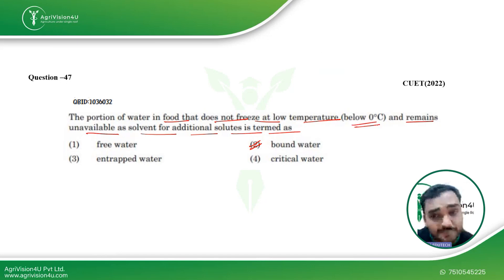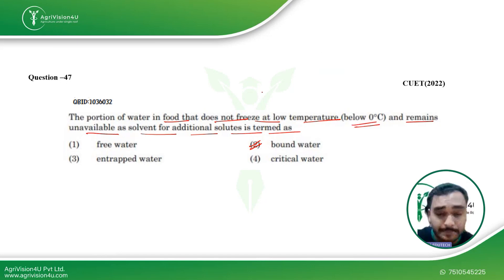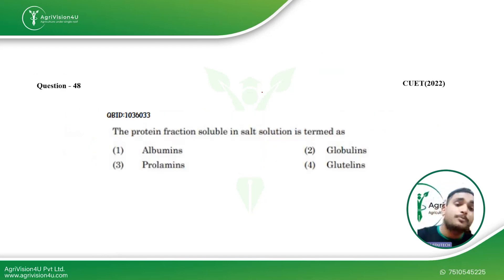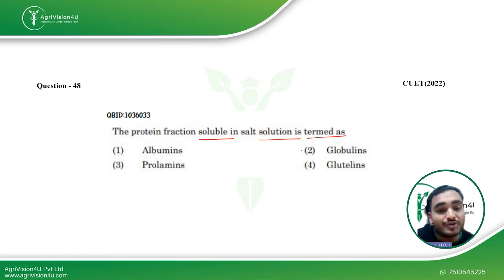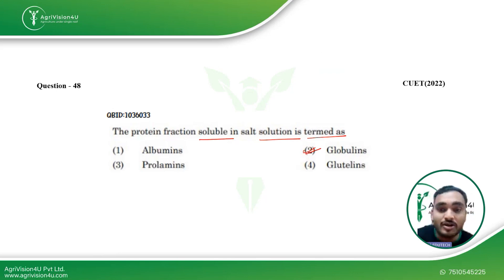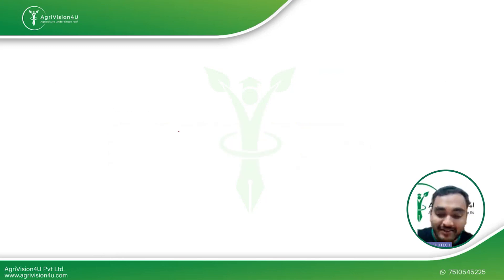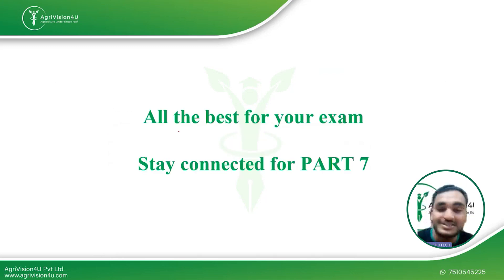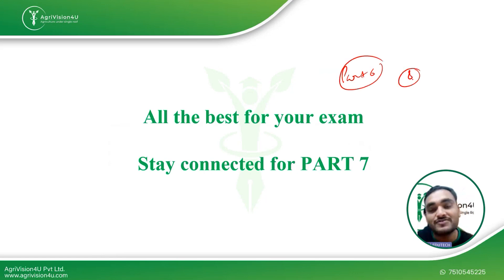Then: the protein fraction soluble in salt solution is termed as — this is a straightforward answer: globulins. We discussed this when covering proteins. The protein fraction that is soluble in salt solution is called globulins. This brings us to the end of our video — Part 6 — where we discussed eight questions asked in CVT 2022.